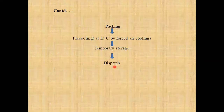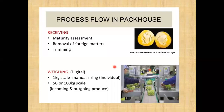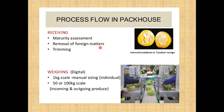One by one we will see in detail about each unit operation. The first unit operation is receiving. At the receiving section, with the appropriate quantity we are receiving your commodity and maturity checking is done. Maturity is checked on the basis of visual criteria, physical criteria, structural criteria, and chemical criteria. By a combination of these criteria we are going to harvest that commodity.